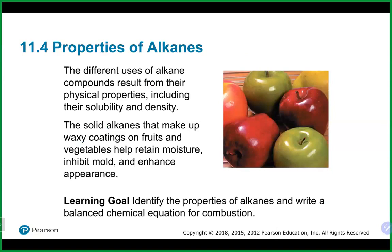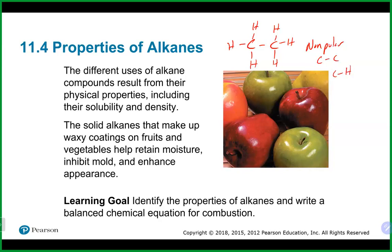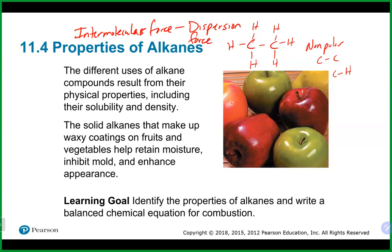We'll continue with alkanes and talk about some of their properties. Alkanes have properties based on what they're made of — carbons and hydrogens. As we've talked about, they are essentially all non-polar bonds: carbon-to-carbon and carbon-to-hydrogen. A lot of the properties of alkanes come from the idea that they are non-polar. They use dispersion forces for their intermolecular forces — really temporary, weak interactions — and that's why we see very low melting points and boiling points.